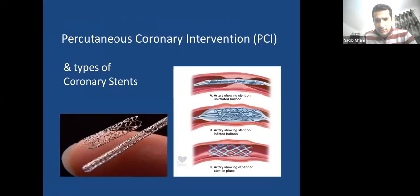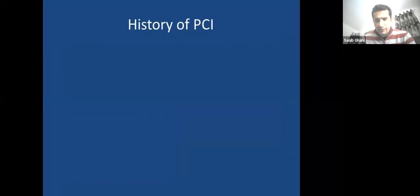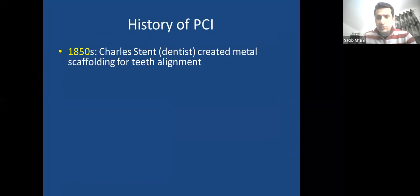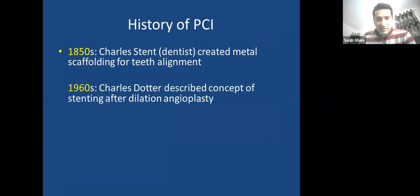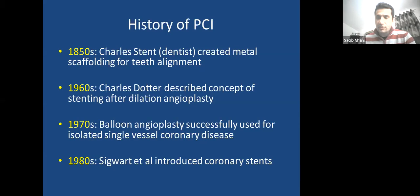Briefly on percutaneous coronary intervention: the word 'stent' comes from Charles Stent, a dentist in the 1850s who created metal scaffolding for teeth. In the 1960s, Charles Dotter described the concept of stenting after dilating vessels. Balloon angioplasty was used in the 1970s for single vessel disease. Coronary stents were not used until the 1980s.